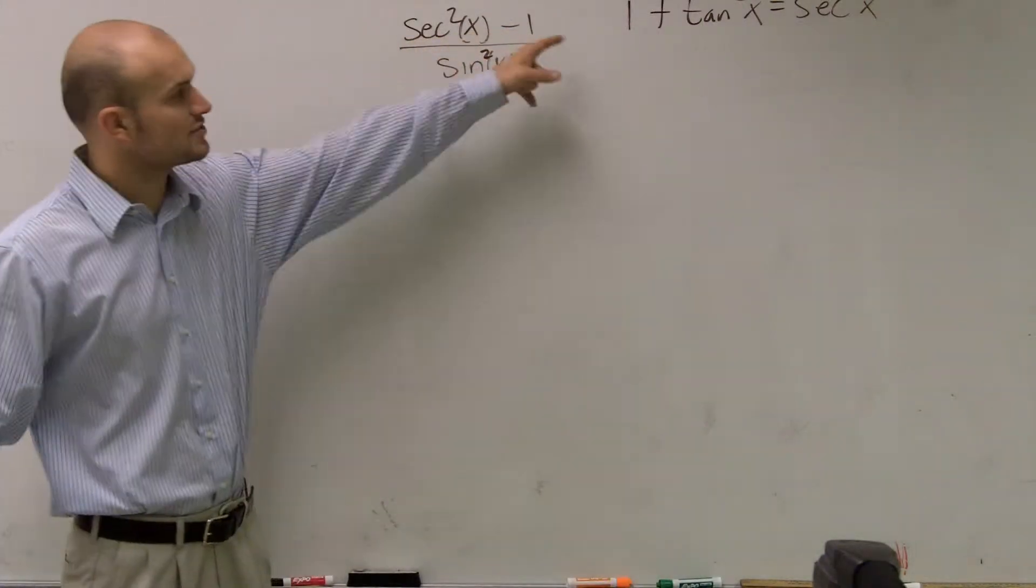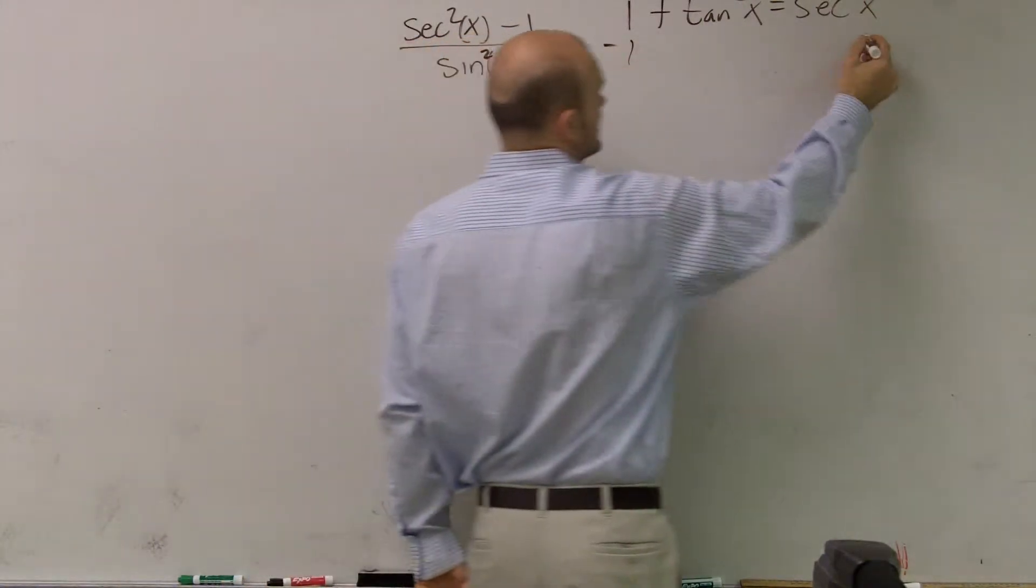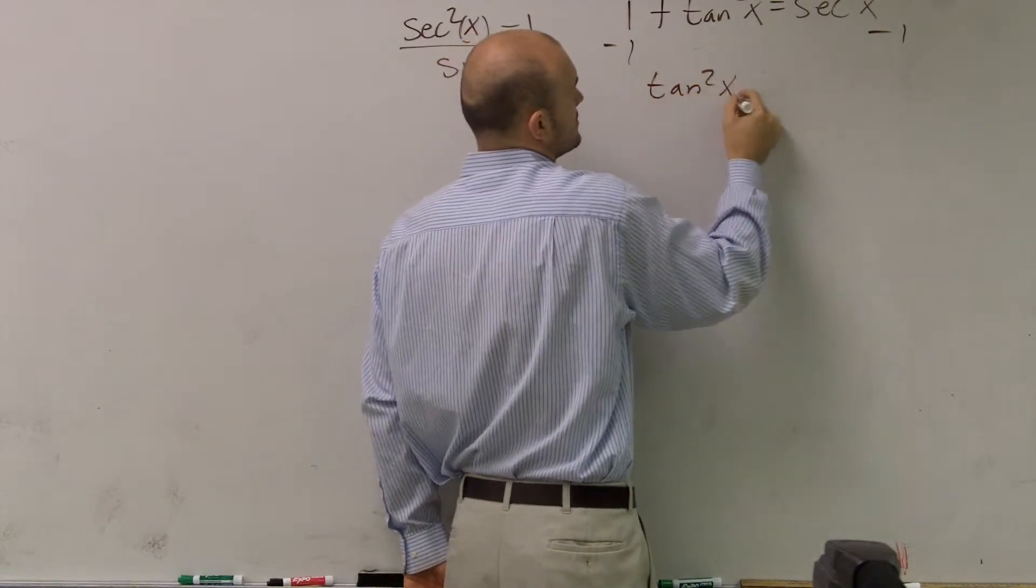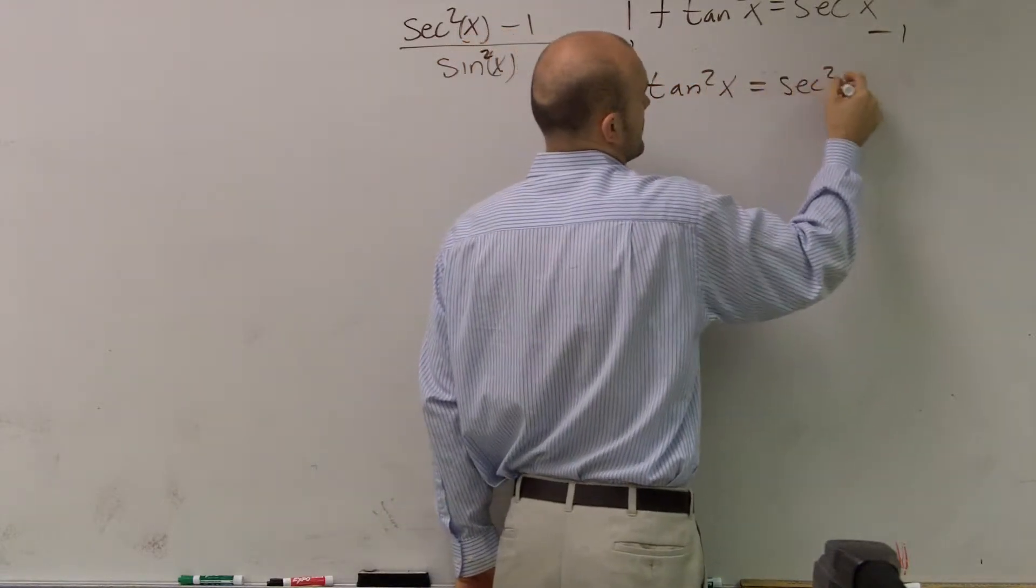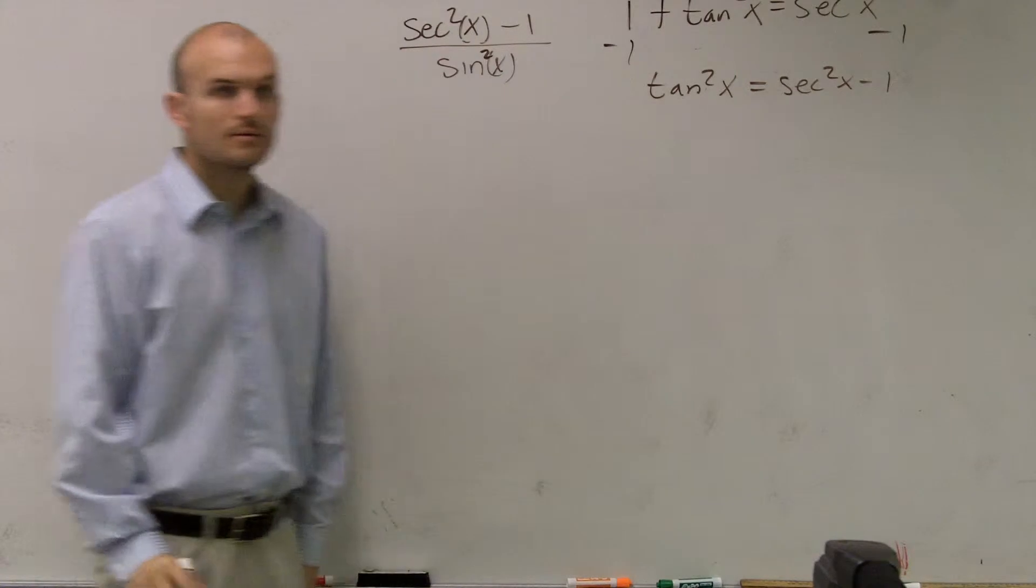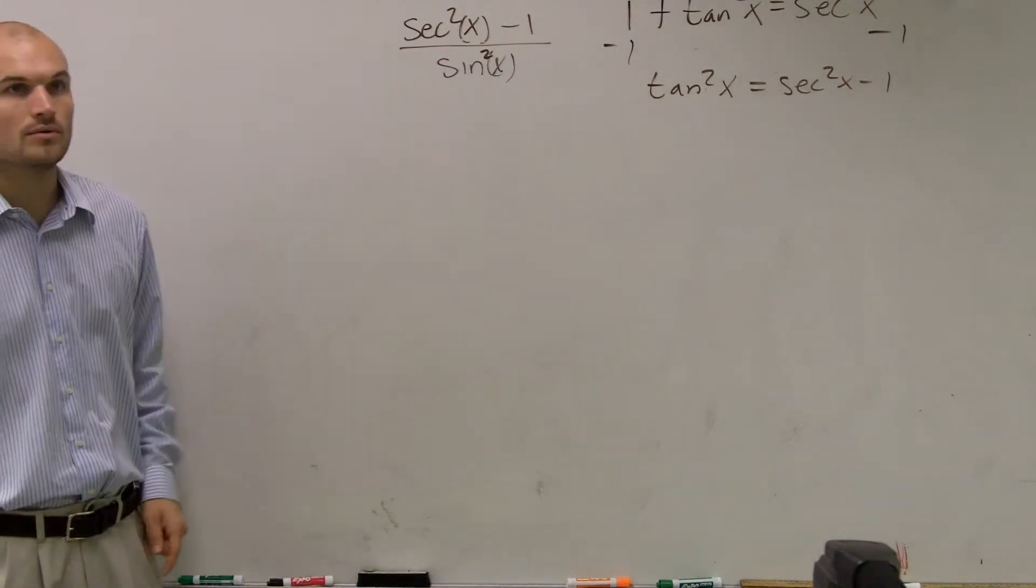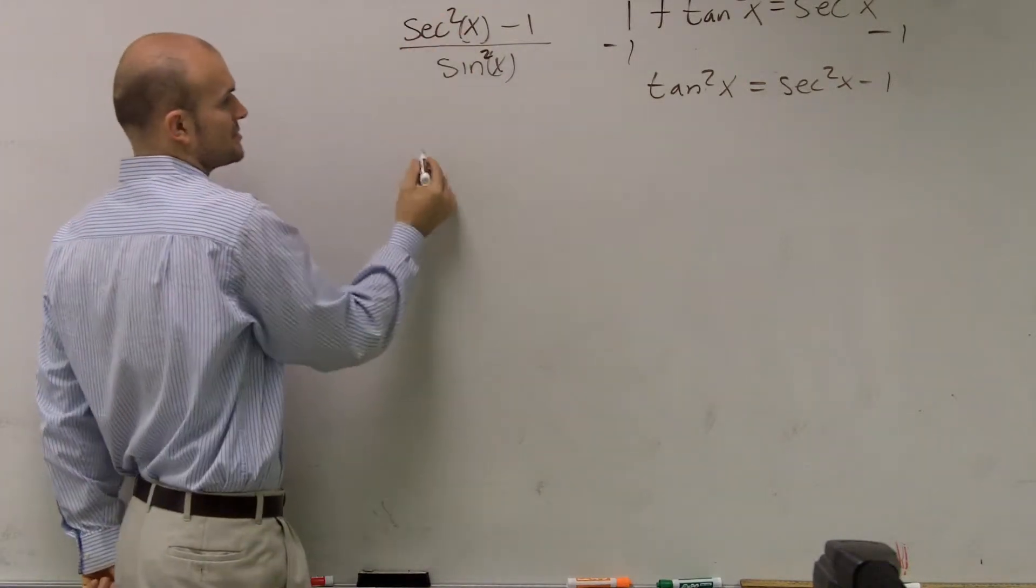So therefore, secant squared of x minus 1, well, if I subtract the 1 on both sides, that's going to equal tangent squared of x. Right? So therefore,